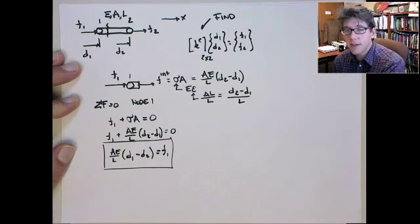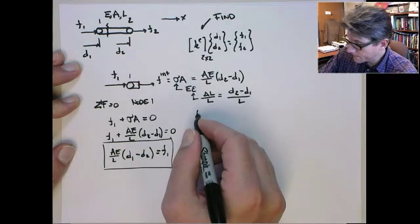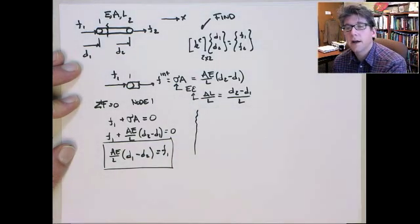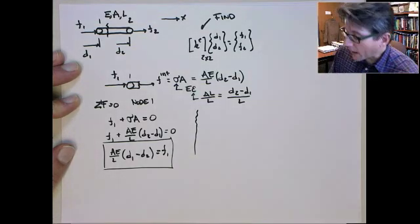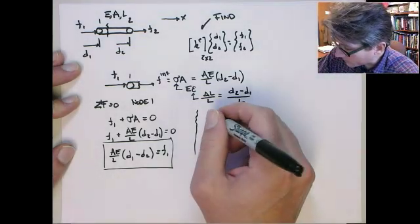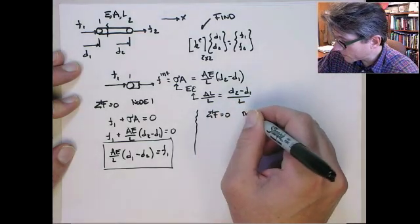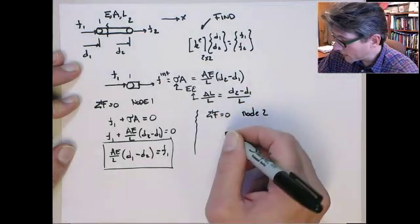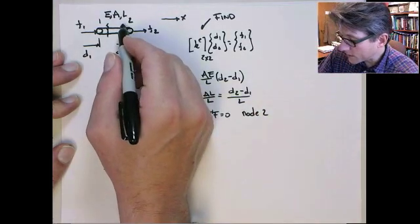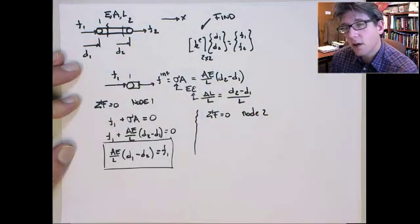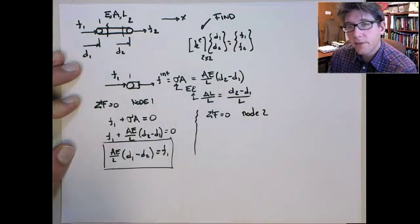Now we're going to do the same force balance, but on node 2. So if we look at node 2, I'm going to do sum of forces equals 0 for node 2. If we look at node 2, again we're going to take a little cross-section. Now it'll be just to the left of node 2.